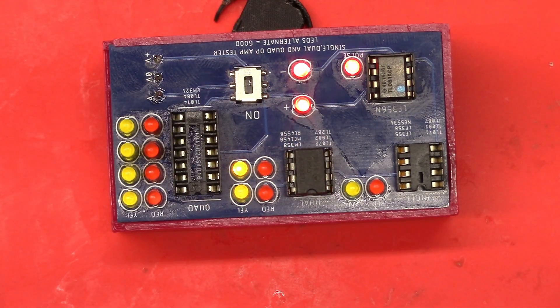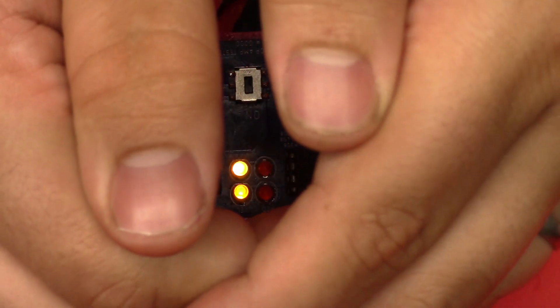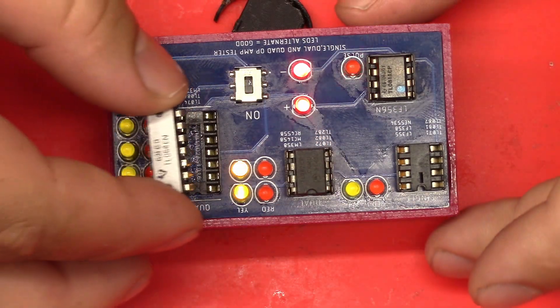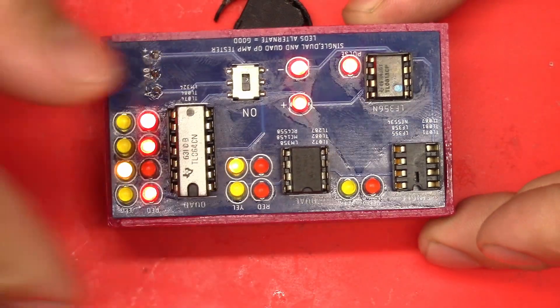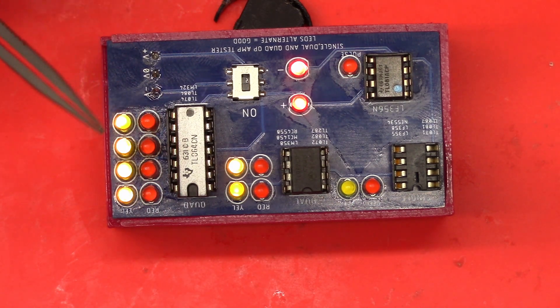As you can see, the red LEDs don't turn on and the yellow ones don't turn all the way off, and they pulse high, so this is a bad op-amp. As you can see, the LEDs are acting really weird, so we do have a bad quad op-amp.